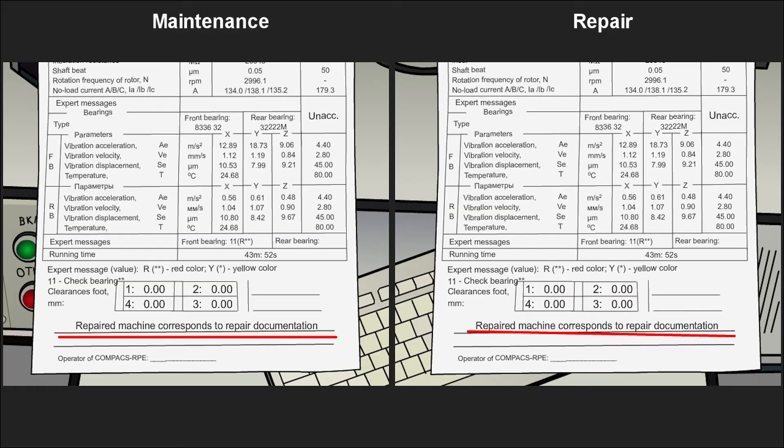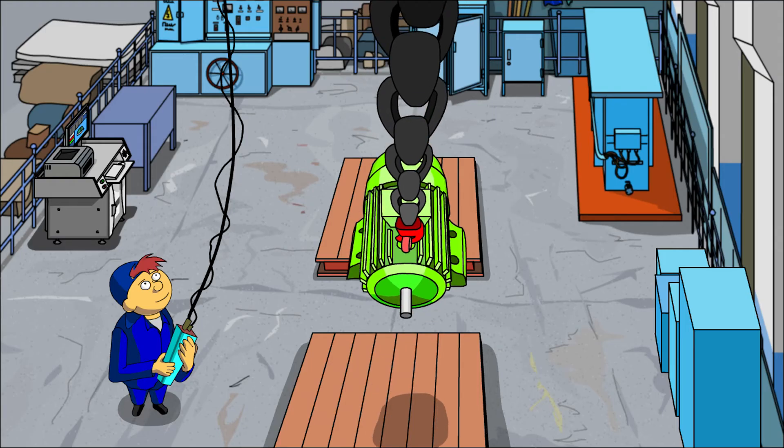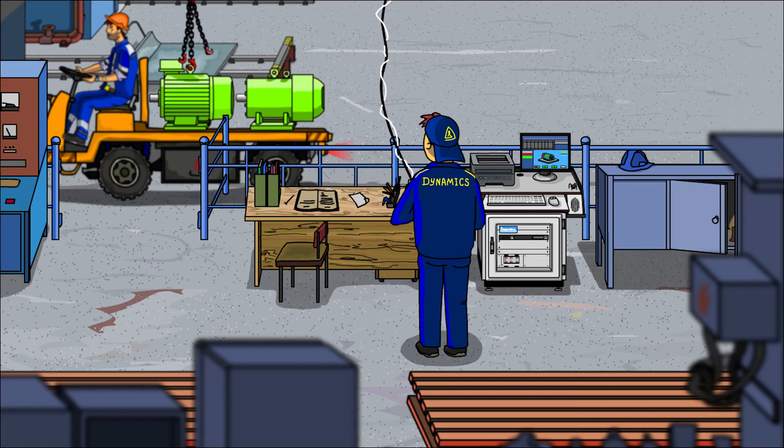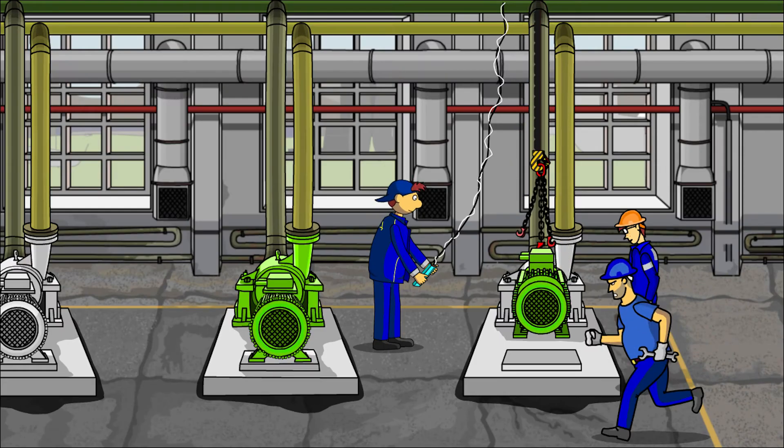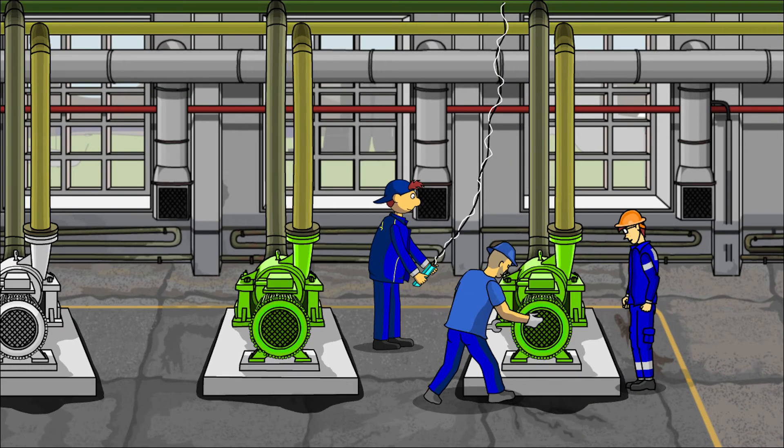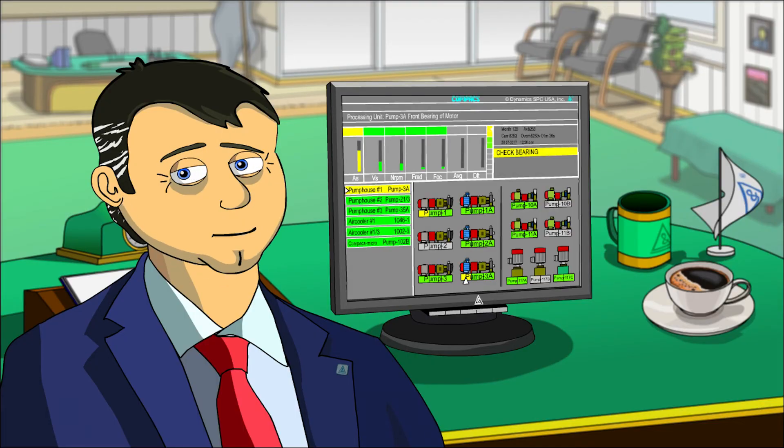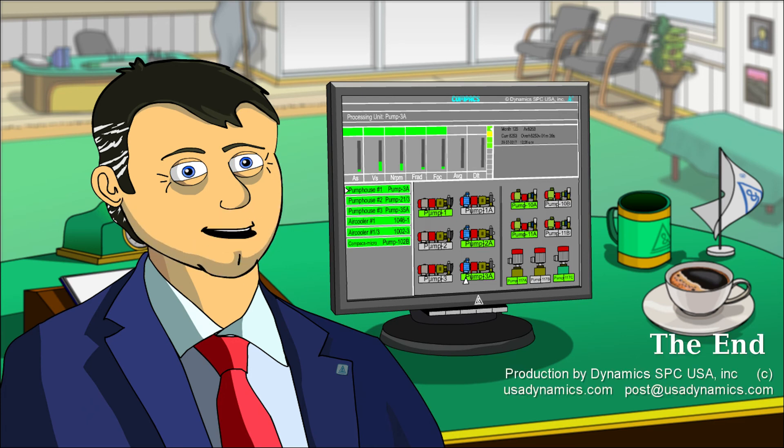By eliminating repeated repairs, it ensures the commissioning of motors with maximum potential residual life. This provides full payback of the system within four to six months or after 30 to 40 repairs with the simultaneous reduction of machinery failure risk.